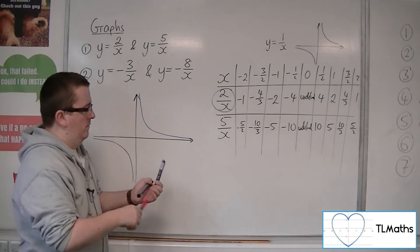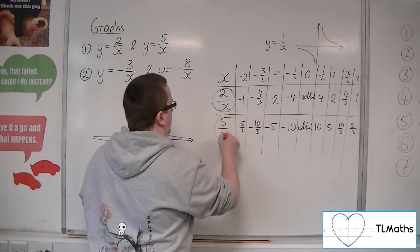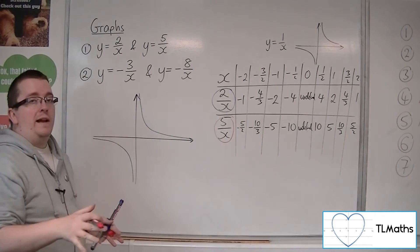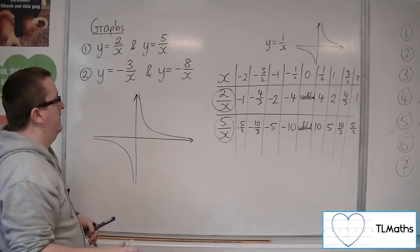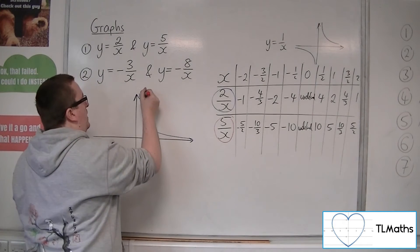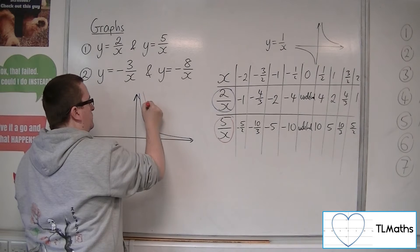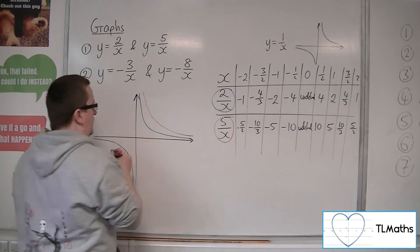Okay? The red one, okay, 5 over x, because all of the y values are larger than it, that means that it will be over the top.